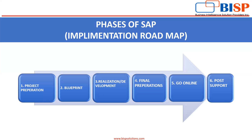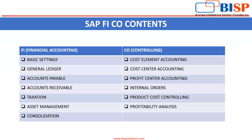In our entire video series, we shall be focusing on how financial accounting and controlling is done in SAP software. In Financial Accounting, we shall be looking into basic configuration and basic settings, journal ledgers, accounts payable, accounts receivable, taxation — which includes both direct taxes and indirect taxes — asset management, and consolidation. Similarly, in Controlling, we shall be covering cost element accounting, cost center accounting, profit center accounting, and so on.